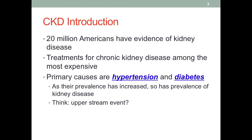Primary causes of CKD are hypertension and diabetes. As the prevalence of hypertension and diabetes increases, so does the prevalence of kidney disease. Hypertension and diabetes are the upstream events in relation to chronic kidney disease.